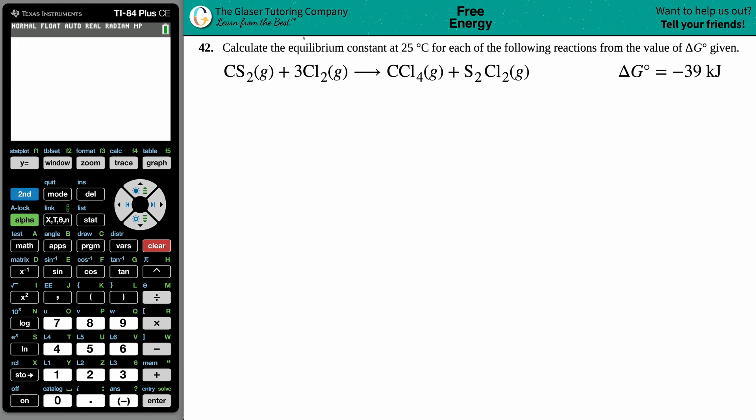Number 42: Calculate the equilibrium constant at 25 degrees Celsius for each of the following reactions from the given value of delta G notch. Delta G notch given, so we have CS2 gas plus 3Cl2 gas yields CCl4 gas plus S2Cl2 gas, and they give me that Gibbs free energy delta G notch of negative 39 kilojoules.